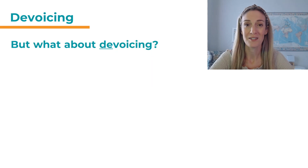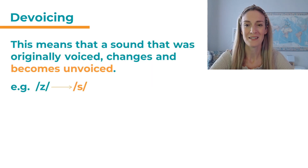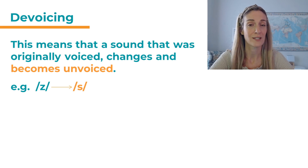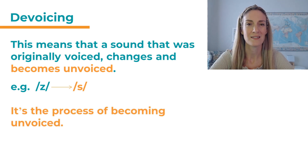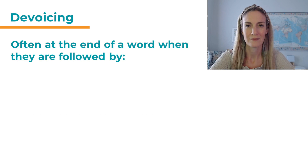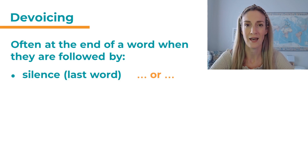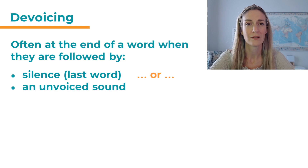Now what about devoicing? This means that a sound that was originally voiced changes and becomes unvoiced. For example, 'z' changes to 's'. This is the process of becoming unvoiced and we call it devoicing. When does this happen? Often at the end of words when they're either followed by silence because it's the last word in a sentence, or when the next sound is unvoiced.